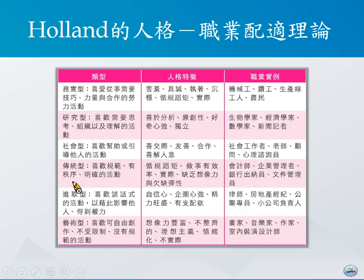第五种类型是所谓的进取型，进取型的人比较喜欢用谈话式的方式来影响他人，借以取得一些权利。这些人常具备的人格特质，可能包括自信心、较强的企图心、精力旺盛，并且有较强的支配别人的欲望。像这类人通常适合的职业，可能包括律师、房地产的经纪人、公关人员，或者是一些小型公司的负责人。